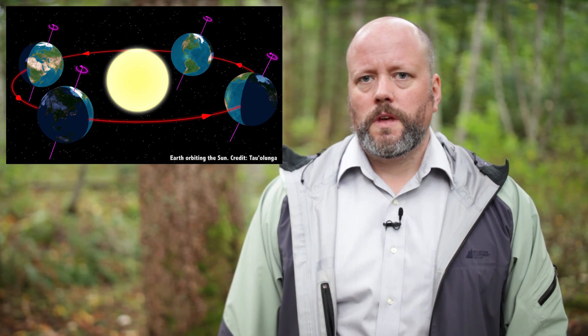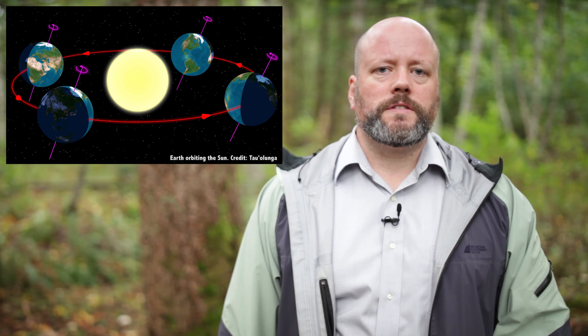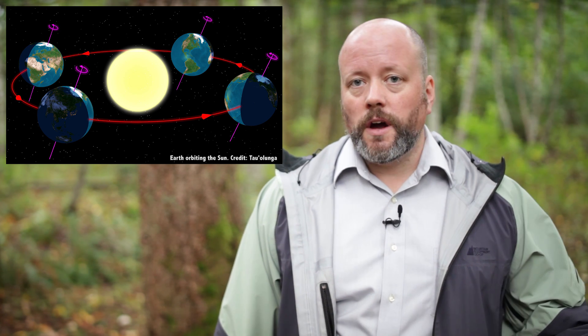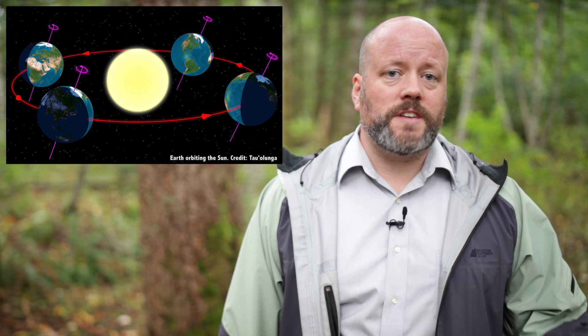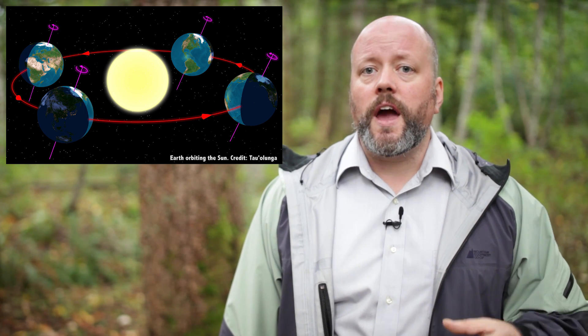So why are these two numbers different? Imagine the Earth orbiting the Sun, taking a full 365 days, 5 hours, 48 minutes and 46 seconds to complete the entire journey. At the same time, the Earth is spinning on its axis. Each day that goes by, the Earth needs to turn a little further for the Sun to return to the same place in the sky, and that extra time is about 4 minutes.